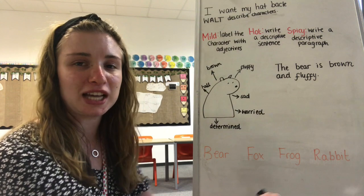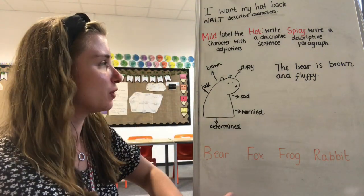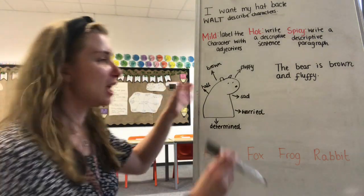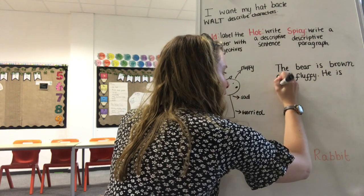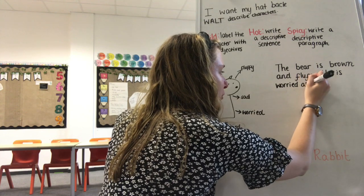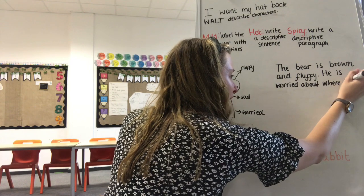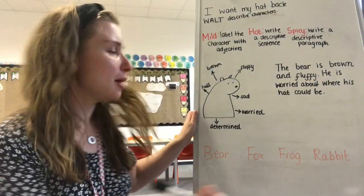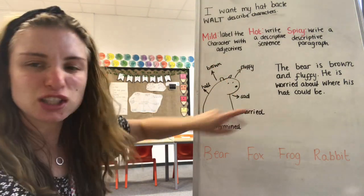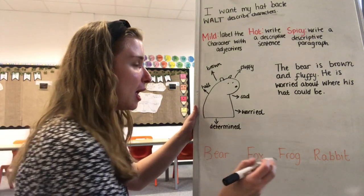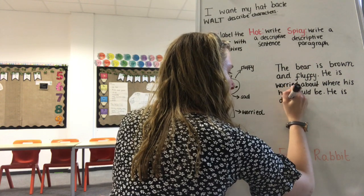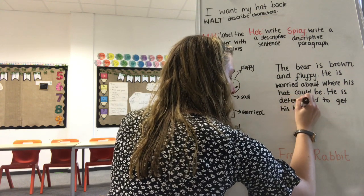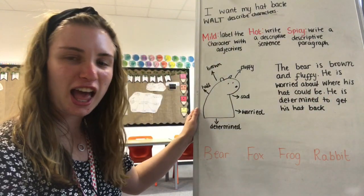If you're writing a paragraph, I want it to have at least three sentences in it — if you want to do more, you can. I've used brown and fluffy. I think I'm going to use the word worried — I quite like that. I'm going to write: 'He is worried about where his hat could be.' With my full stop on the end. For my final one, I'm going to use determined: 'He is determined to get his hat.' And what do I need to end my sentence with? A full stop.